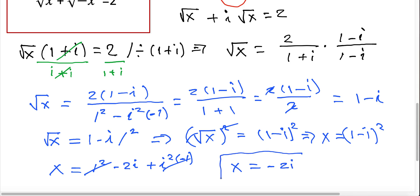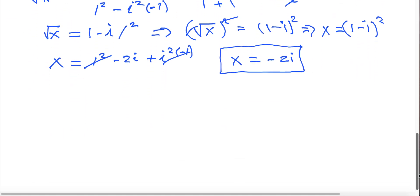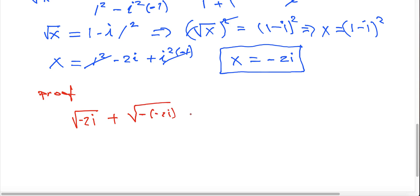So x = −2i is the solution. Now let's prove that this solution is valid. We plug in x = −2i: square root of (−2i) plus square root of minus(−2i) equals 2. Simplifying, negative times negative gives positive 2i, so we have square root of (−2i) plus square root of (2i) equals 2.